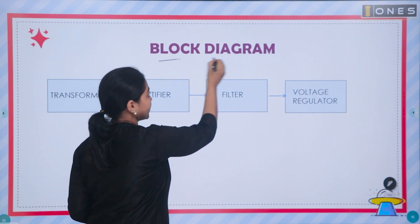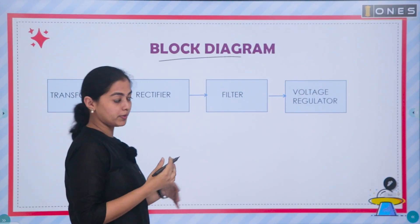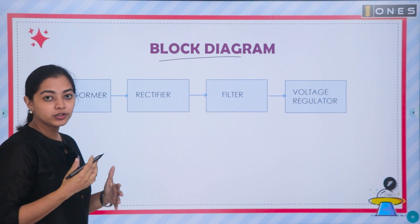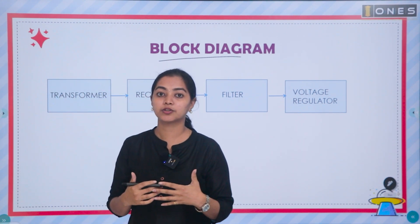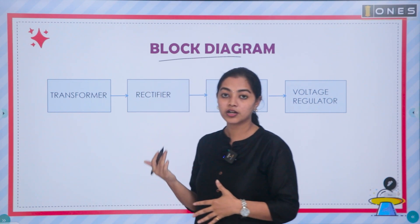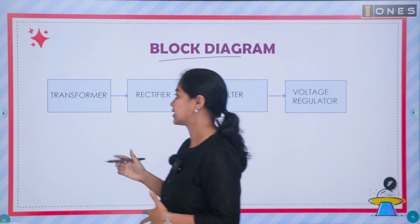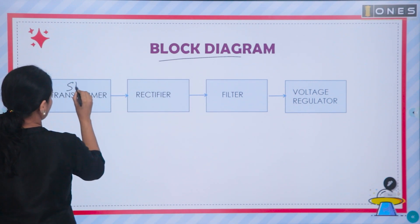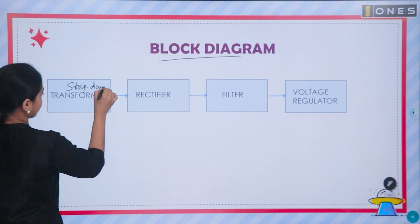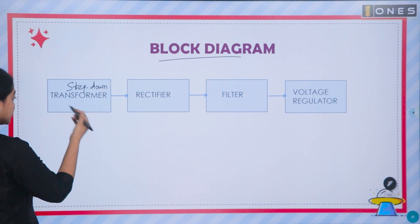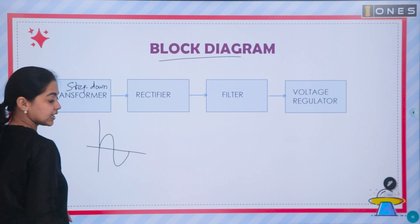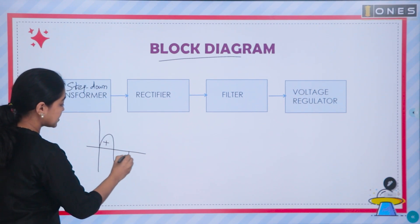First, we will begin with the basic block diagram. Considering the transformer, the input is high voltage signals. Normally, we will use step-down transformers. The transformer output is an alternating signal — a bidirectional signal.